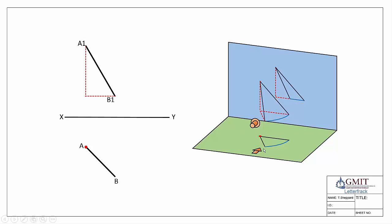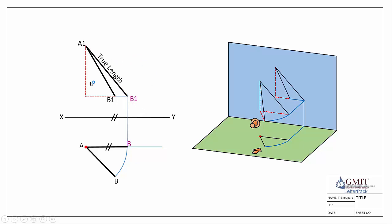In the drawing, we draw a level line parallel with the XY line — because that's what's needed for a true length — and using the hinge point we swing point B around to its new position, then bring it straight up into elevation. Since the line doesn't drop any height as it swings, we continue point B straight out, giving us the new position and our true length.